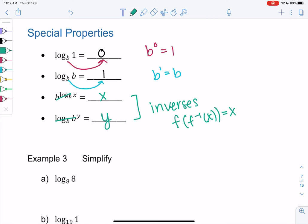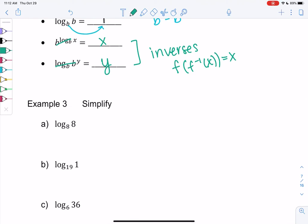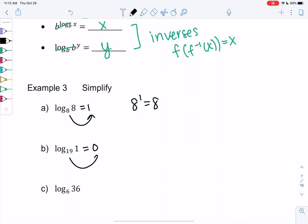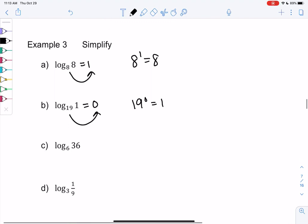So example 3, we'll simplify. We'll use these properties if we can. Otherwise, I'll show you what to do. Log base 8 of 8 is 1. And that comes from the idea that 8 to the 1 power is 8. Log base 19 of 1. We learned any log of 1 will be 0. Or that's because 19 to the 0 power is 1. How about the next one? Log base 6 of 36. So this doesn't quite cancel out. So what I'm going to do is I'm going to say 6 to the what power equals 36. So it's like backwards thinking. And so I think it's 2. 6 squared is 36. So the solution to the log is 2, the power. We're solving for the power.